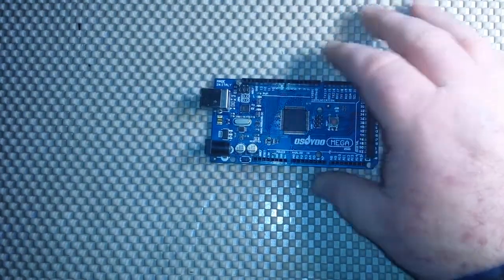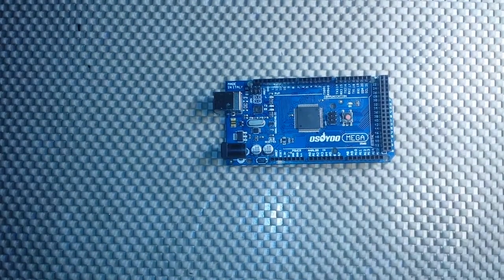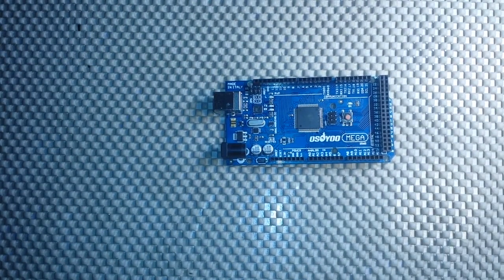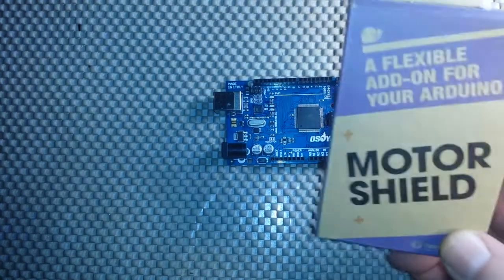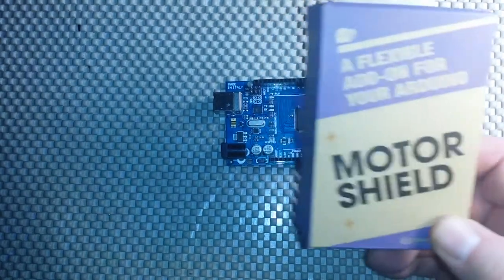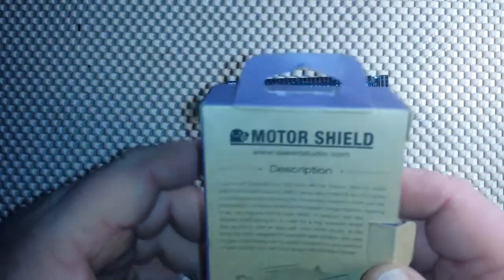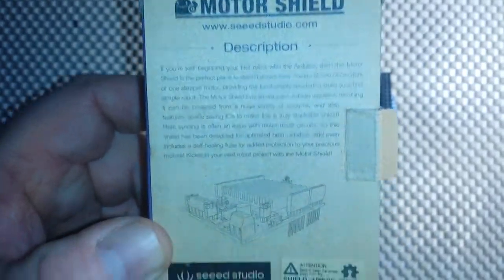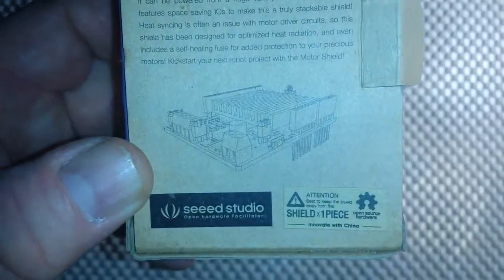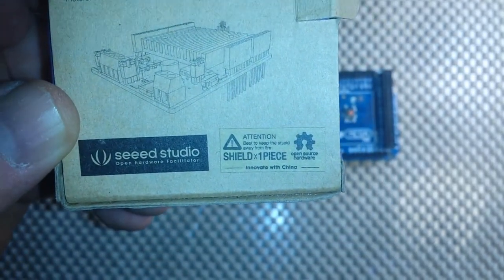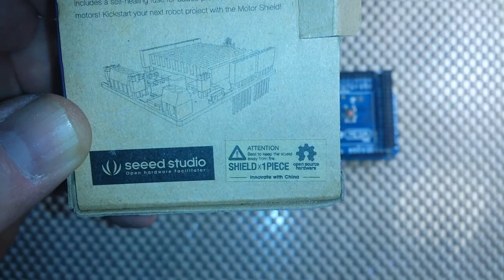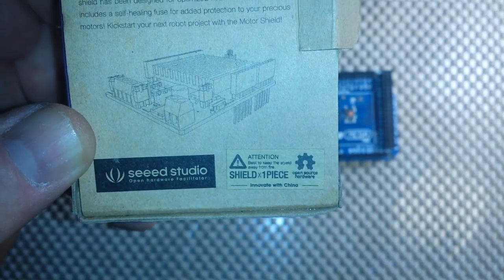Now, for our project here, I think what I'm going to do is I'm going to use the Arduino Mega. And for the forward and reverse control, I'm going to use a motor shield. This was one available from Seed Studio, and I definitely want you to read this here. This is fantastic. Right there under Attention. Best to keep the shield away from fire. Ya think?